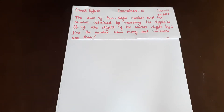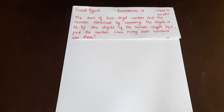Welcome to GoodAfford channel. Good morning students. Now let's look at example number 13. The sum of a two-digit number and the number obtained by reversing the digits is 66. If the digits of the number differ by 2, find the number. How many such numbers are there?